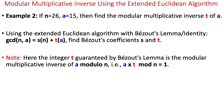Now let's find the modular multiplicative inverse using the extended Euclidean algorithm, which is a more efficient method. We calculate the modular multiplicative inverse t using the extended Euclidean algorithm with Bezout's lemma or identity, where we find Bezout's coefficients s and t. The integer t guaranteed by Bezout's lemma is the multiplicative inverse of a modulo n, that is, a times t mod n equals 1.